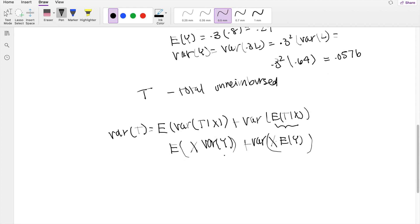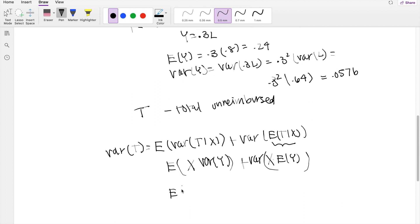Keeping the outside shell on here. We know what variance of Y is. It's right here. 0.0576 times X plus the variance of X times the value of Y. That's going to be equal to 0.24.